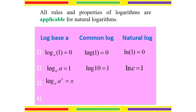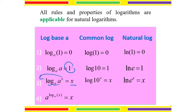The third property: log base A of A to the power of X — bring the power to the front using the power law, leaving log A of A which equals 1, so we are left with X only. The same applies to common and natural log. The fourth property: A to the power of log base A of X gives X as the result — same base for exponent and log. Similarly, 10 to the power of log base 10 of X equals X.